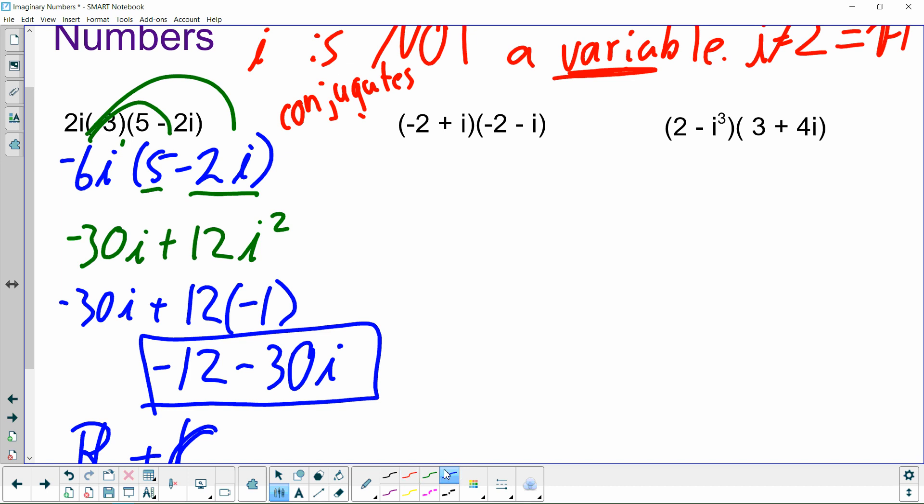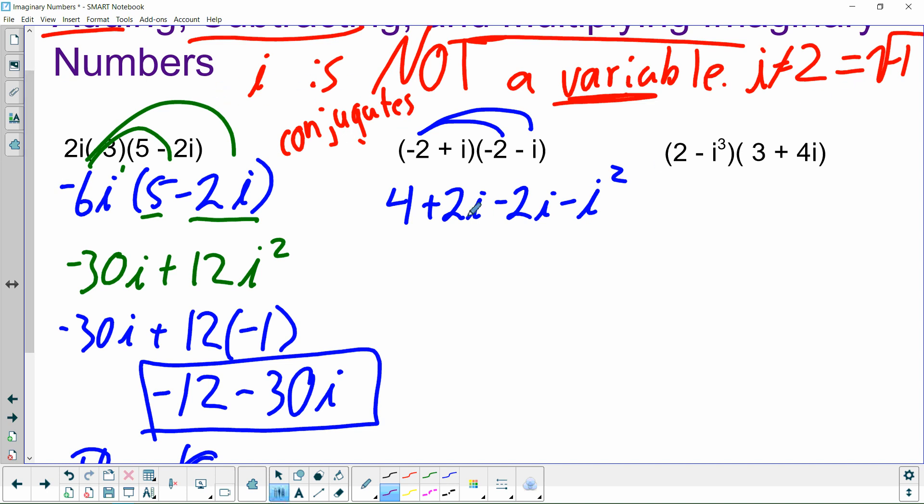I tend to say FOIL, because that's what my math teacher said. So we're going to distribute this here. So negative 2 times negative 2 is 4. Negative 2 times negative i, a negative times a negative is a positive, and 2 times i is just 2i. i times negative 2 is negative 2i, and then i times negative i is negative i squared. Again, I'd like to reiterate that i's are not variables, but treat them sort of like them, for the sake of doing your math right. These are like terms.